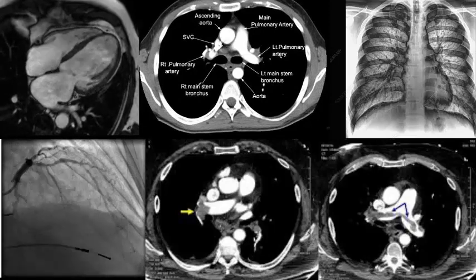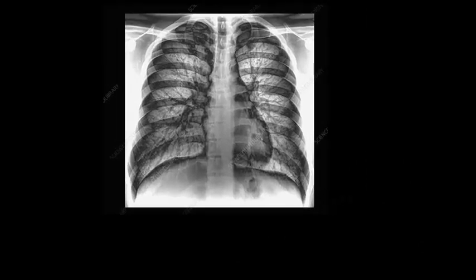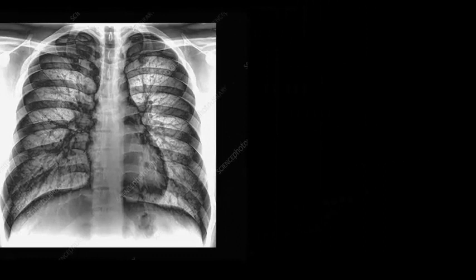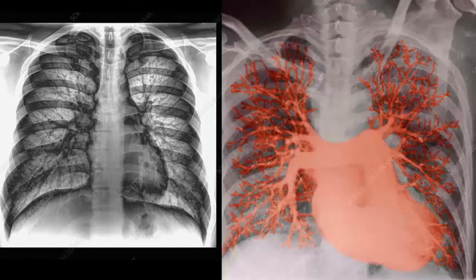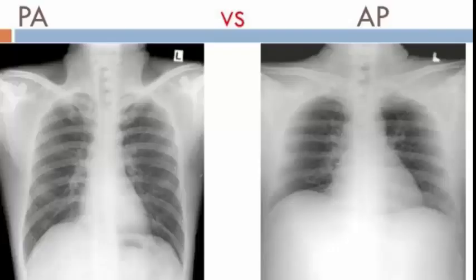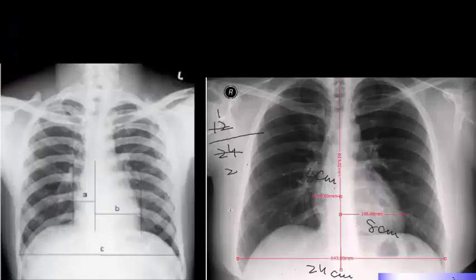First we will study chest X-ray. X-ray is the easiest way to see the size and shape of the heart. We can also see the state of the pulmonary blood vessels and lung fields. For best views, we take a chest X-ray in posterior-anterior view during full inspiration. Anterior-posterior (AP) view is done when the patient is bed-bound, but it results in a magnified cardiac shadow.